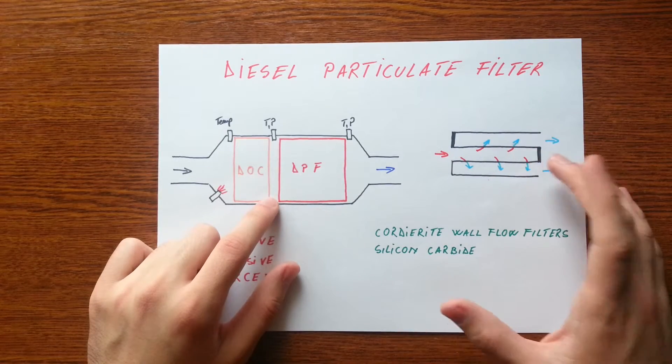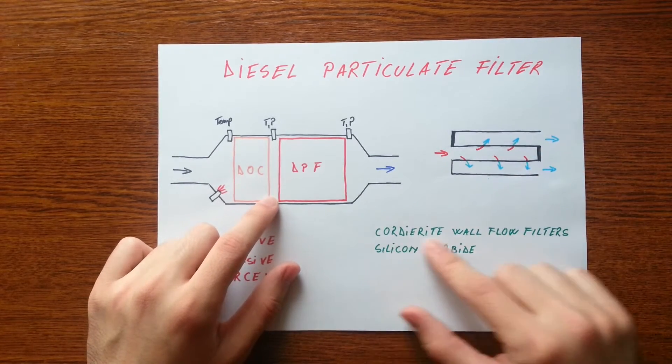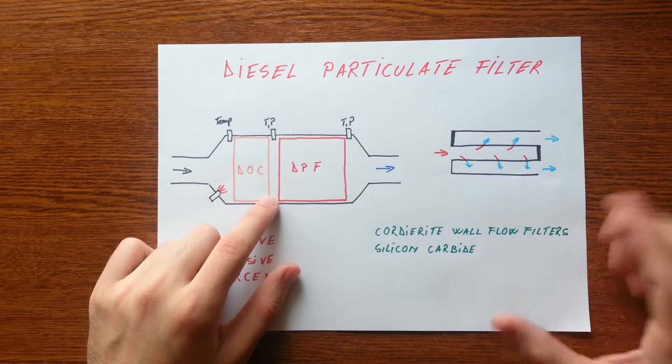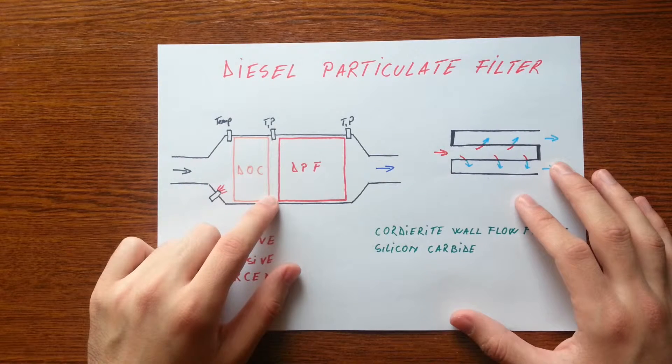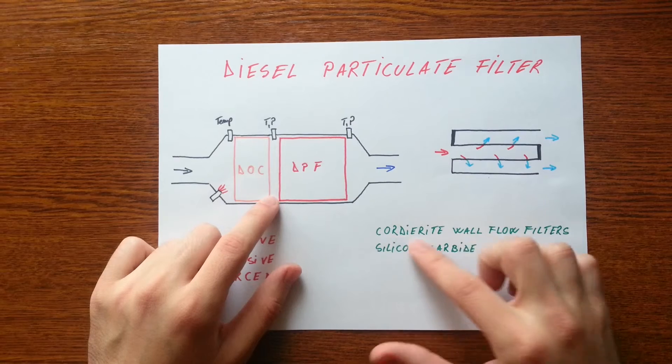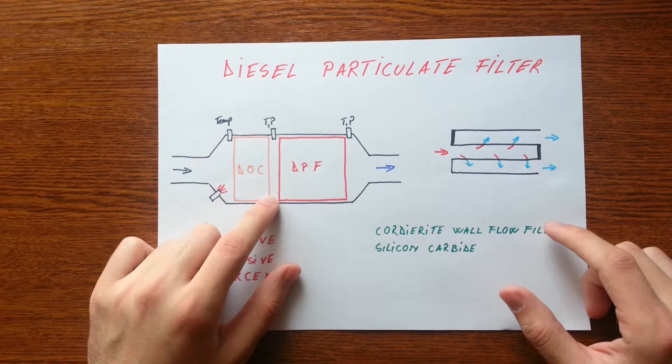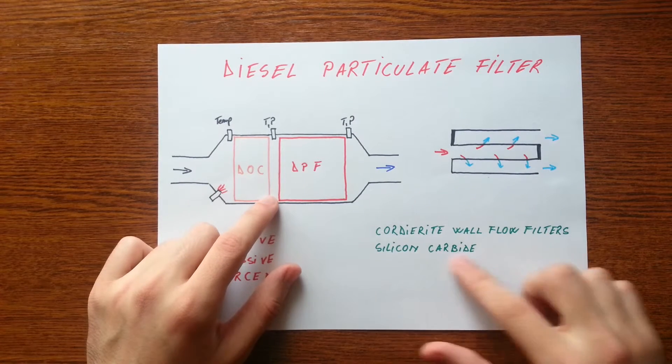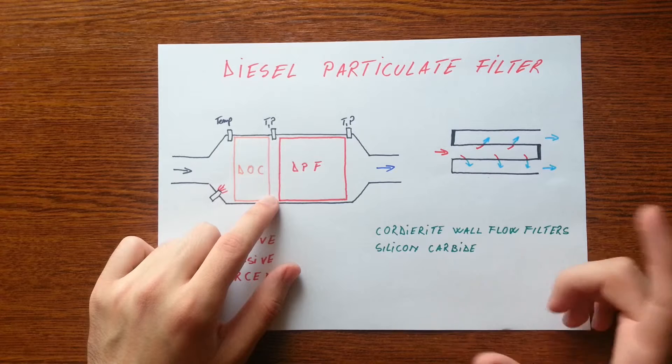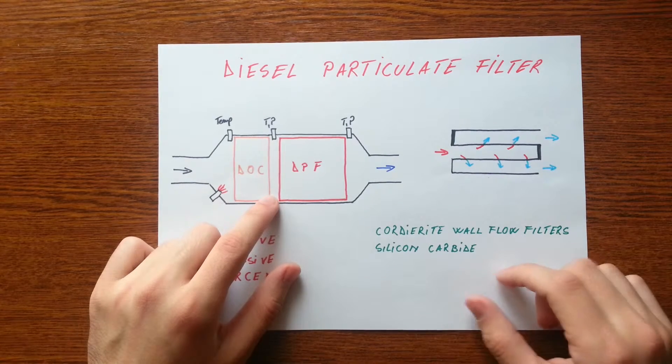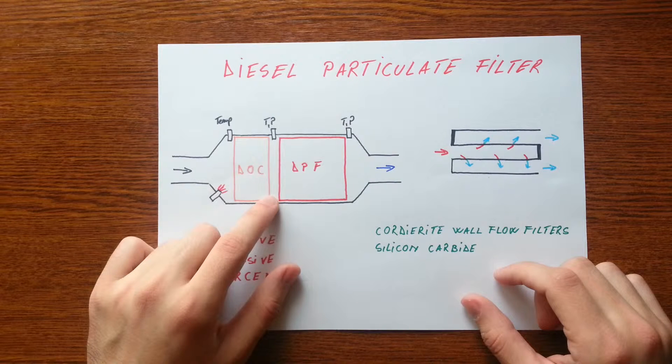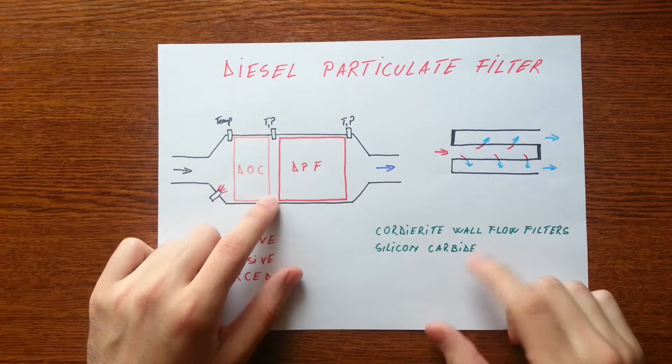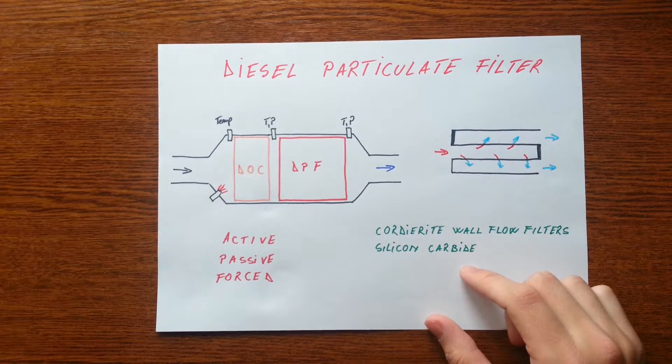Most DPFs are made from ceramic material like cordierite wall flow filters with a honeycomb look, with a low melting point for cordierite around 1200 degrees Celsius. Or it can also be silicon carbide with a melting point of 2800 degrees Celsius and 99% filtration efficiency.